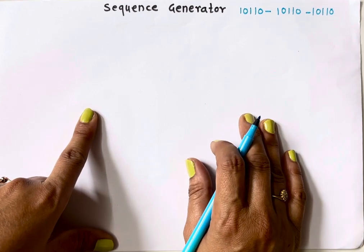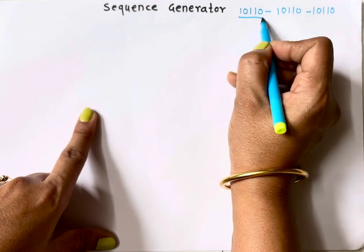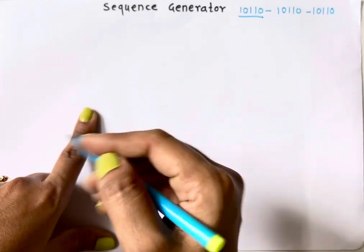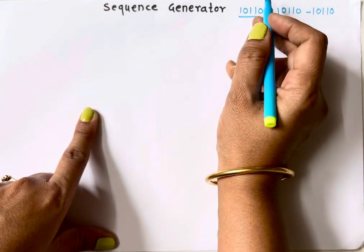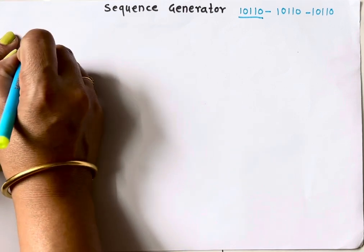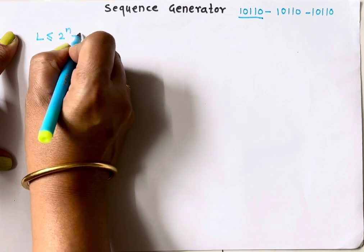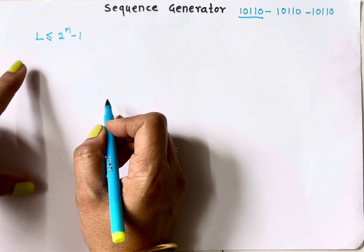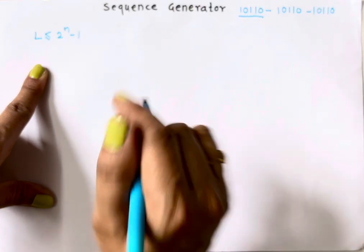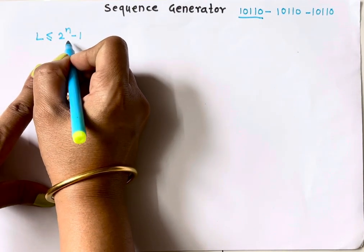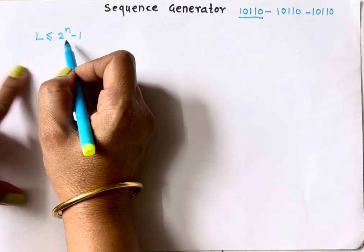If I ask you to design a sequence generator circuit which can generate this sequence, the first step is to identify how many flip-flops are required. The equation is: L must be less than or equal to 2 raised to n minus 1, where L is the length of the sequence. Here the length is 5, and n means the number of flip-flops required — this is the minimum number.